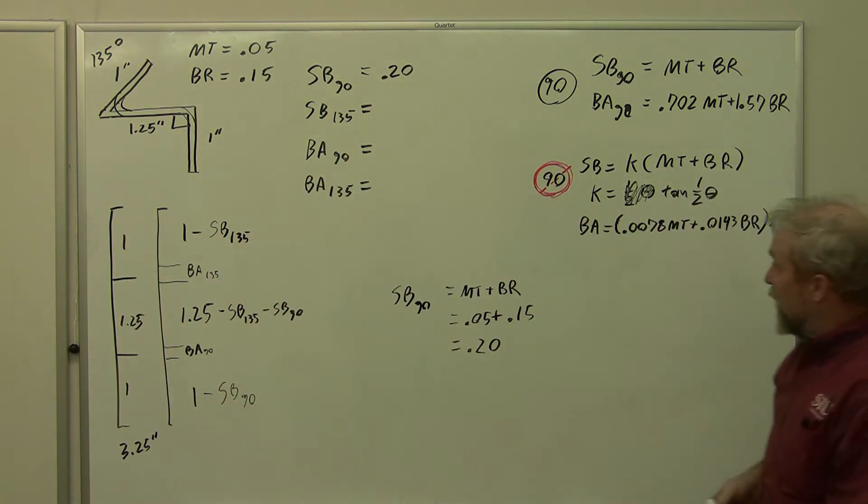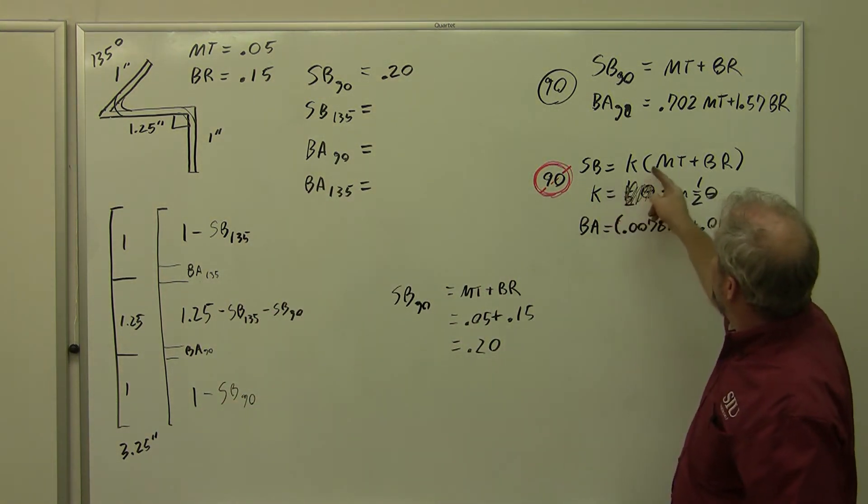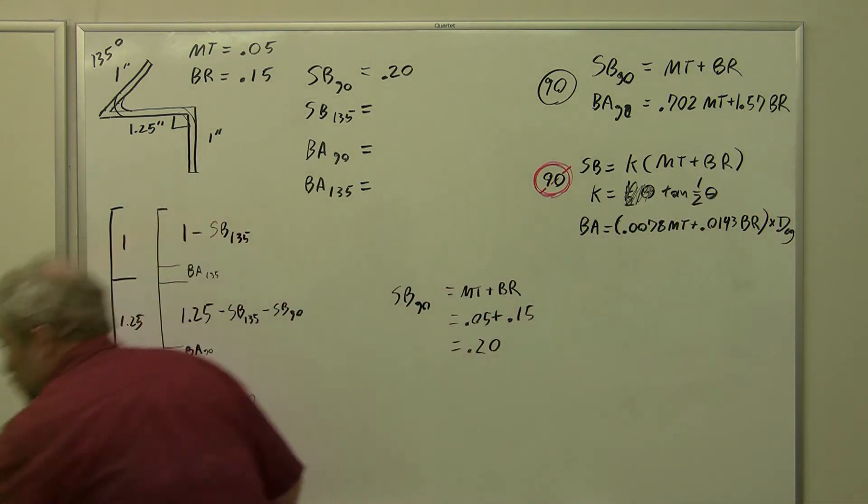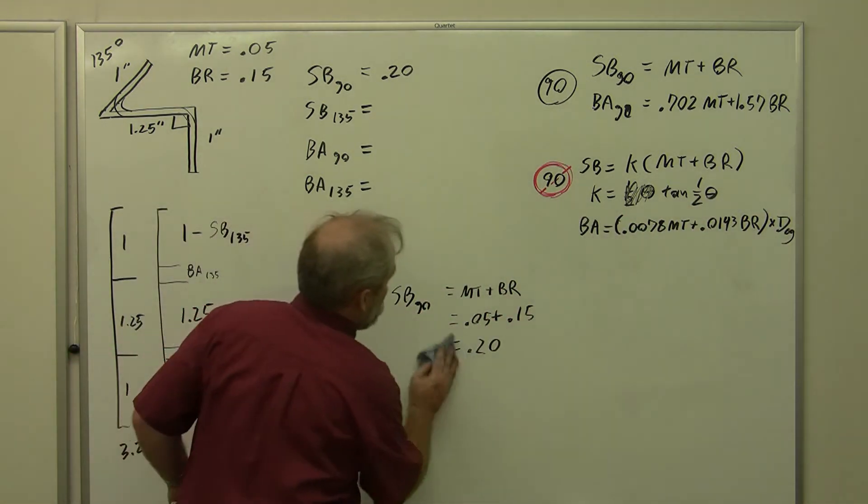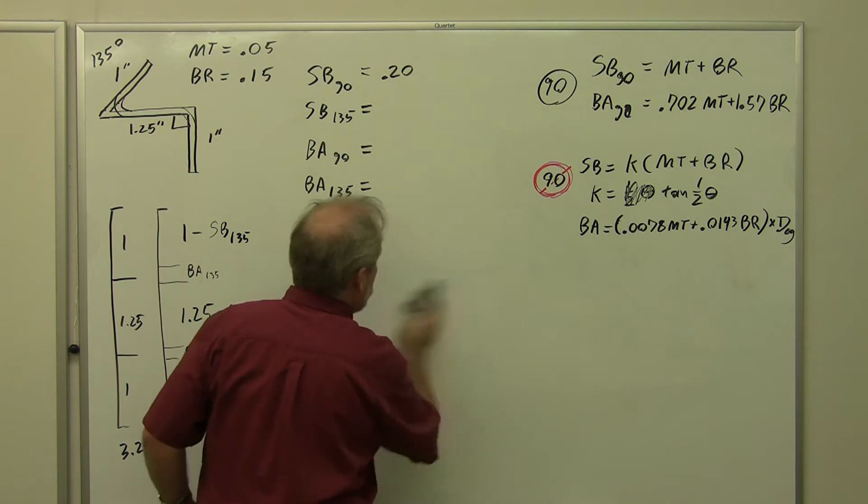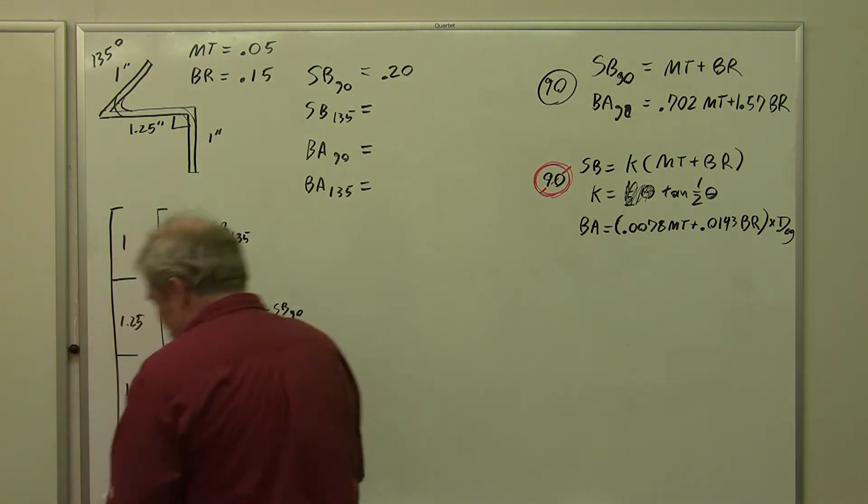Setback 135, you notice this formula is the same except we have a K in it. I'm going to go ahead and erase it, but for those of you who've already figured this out, all you have to do is multiply setback 90 by K for 135.